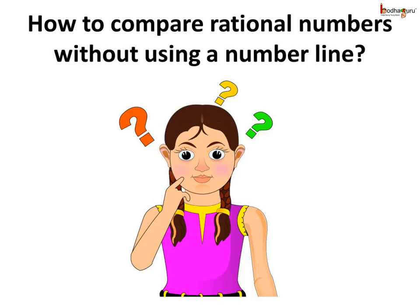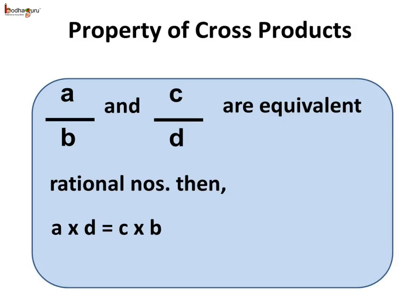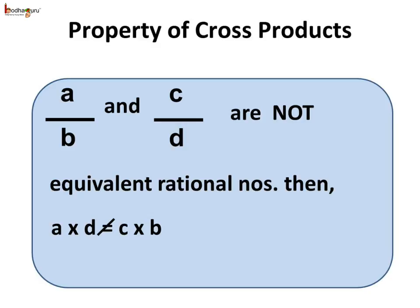Now, how to compare rational numbers without using a number line? Remember the property of cross products or cross multiplication, which we use to check if two rational numbers are equivalent or not? Here, if a by b and c by d are two equivalent rational numbers, then a multiplied by d would be equal to c multiplied by b. Which means if the two rational numbers are not equivalent, then a multiplied by d is not equal to c multiplied by b.